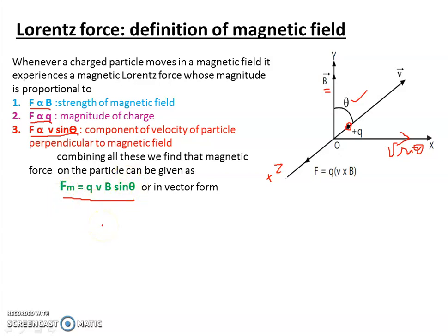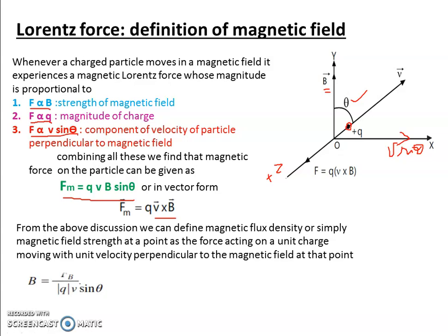So this is the Lorentz Force. Now for the direction, we introduce the vector form: F_M (vector) = Q(V × B). The direction of force will be perpendicular to the plane containing the velocity vector and the magnetic field. We can also calculate the magnetic field strength if we have the values of magnetic force, charge, velocity, and the angle between velocity and magnetic field.